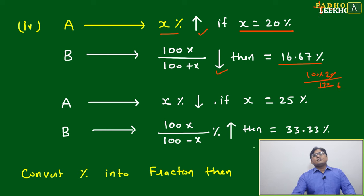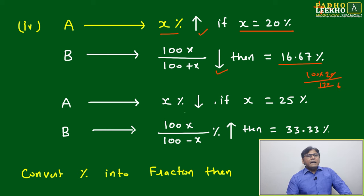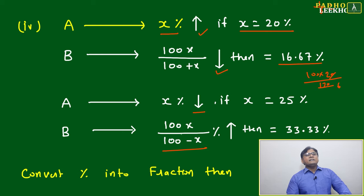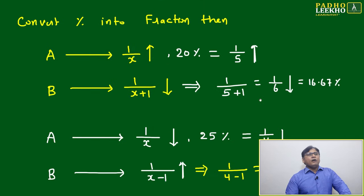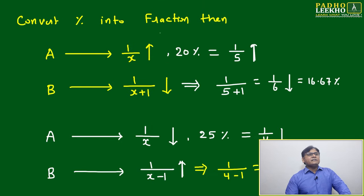That gives 600 by 6, which equals 16.67 percent. Now if a is decreased by x percent, then b will increase by 100x divided by (100 minus x) — not 100 plus x. This gives 33.33 percent.